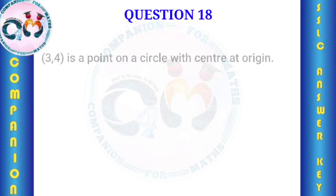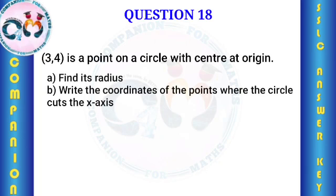Point (3, 4) is on a circle with center at the origin. Find its radius. Write the coordinates of the points where the circle cuts the x-axis.